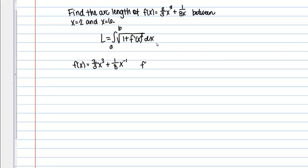Then if I find my first derivative, I'm going to get 2/3 times 3X squared plus 1/8 times negative 1 X to the negative 2. If I clean that up a little bit, that's 2X squared minus 1/8 X to the negative 2.